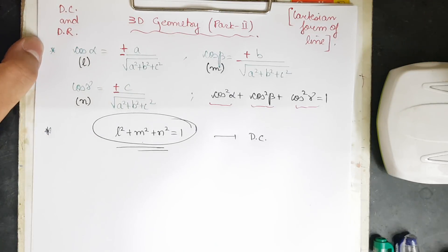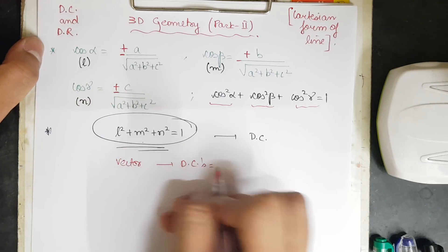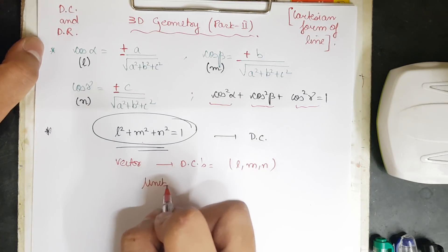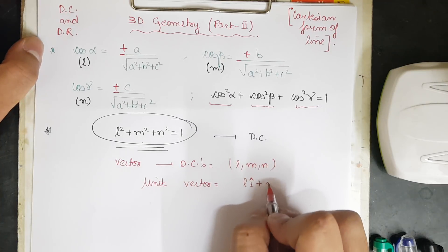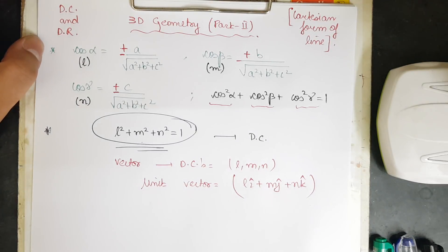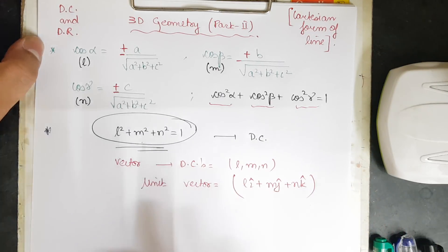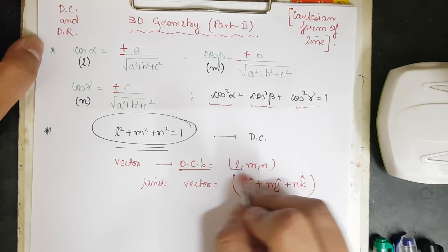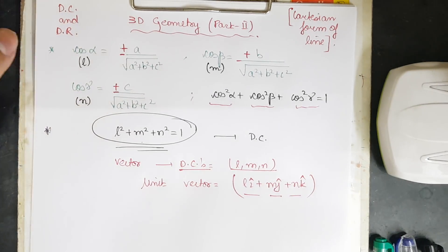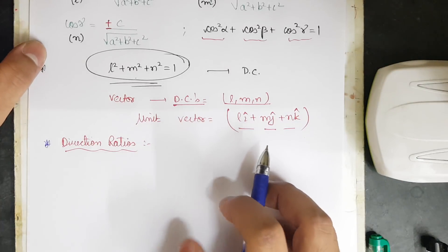If we have any vector which has direction cosines l, m, and n, then the unit vector along that direction can be written as l·î + m·ĵ + n·k̂. It is a unit vector because its magnitude equals √(l²+m²+n²) = 1. So if we have been given any DCs, the unit vector along that direction is l·î + m·ĵ + n·k̂.